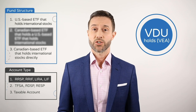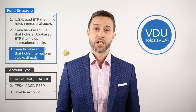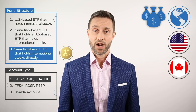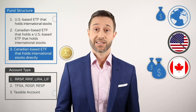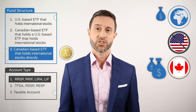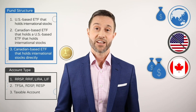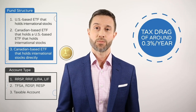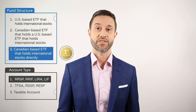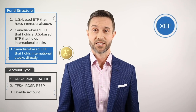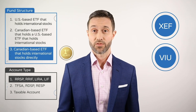The remaining two fund structures avoid the second layer of US withholding tax in RRSPs and RIFs, but for different reasons. A Canadian-based ETF that holds international stocks directly allows the foreign dividends to bypass the US on their way to Canada. The second layer of withholding tax is thus avoided, although the first layer still applies. The end result is a tax drag of around 0.3% per year. Examples include the iShares Core MSCI EAFE IMI Index ETF with ticker symbol XEF, the Vanguard FTSE Developed All Cap ex-North America Index ETF with ticker symbol VIU, and the BMO MSCI EAFE Index ETF with ticker symbol ZEA.